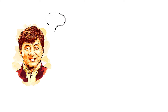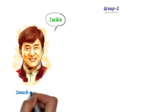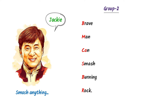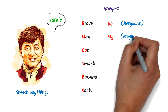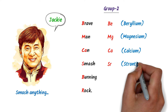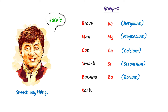Secondly, consider Mr. Jackie Chan. We know that he is a very brave man because he can smash anything. So I say: brave man can smash burning rock. Here, B stands for Be — Beryllium, M stands for Mg — Magnesium, C stands for Ca — Calcium, S stands for Sr — Strontium, B stands for Ba — Barium, R stands for Ra — Radium. Thus this is the second group of the periodic table.